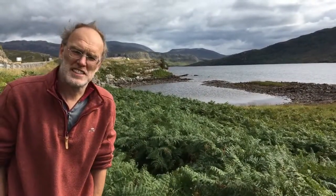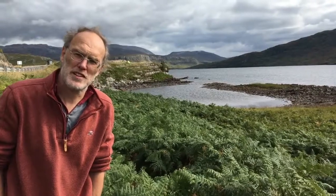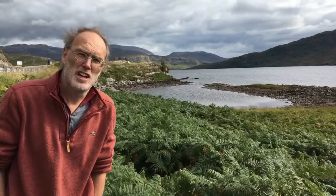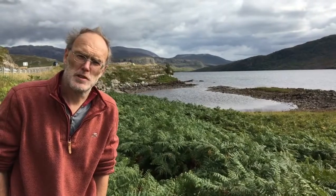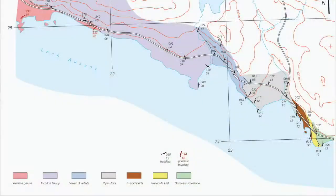This is Loch Assynt. This exercise is about building a stratigraphic section along the road section here and using the field map to build up a true thickness for the units. This is the geological map we'll use — it's simplified from field mapping. The grid squares are one kilometre, so we're only looking at a couple of kilometres of road section here.